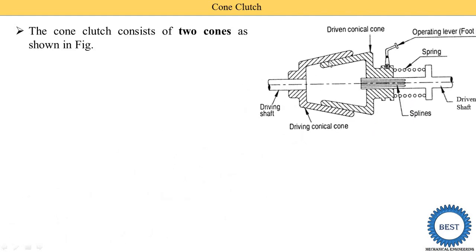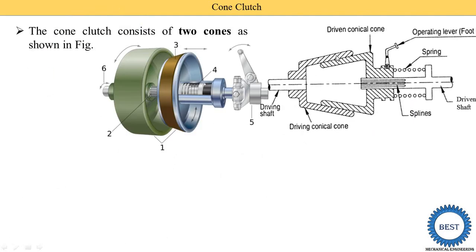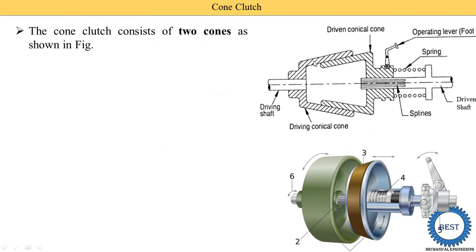Here you see this is the diagram of the cone clutch. It consists of two cones. This one is called the driving conical cone and this one is called the driven conical cone. This is the 3D diagram of the cone clutch. Here you see this is the one cone and this is the second cone. That is why its name is given the cone clutch.